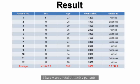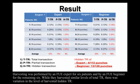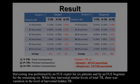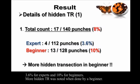There were a total of 12 patients. Harvesting was performed by an FUE expert for six patients and by an FUE beginner for the remaining six. While they harvested similar levels of total transection rate, there was variation in the level of harvested hidden transection rate: 3.6% for experts and 10% for beginners. More hidden transection rate was noted when done by a beginner.